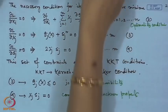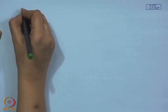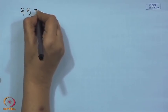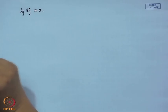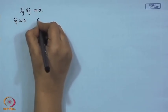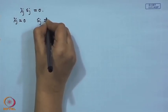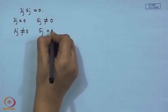Let us study the KKT conditions further, concentrating on the third condition: λ_j · s_j = 0. If λ_j = 0, then s_j ≠ 0. And if λ_j ≠ 0, then s_j = 0. Let us examine what this means.